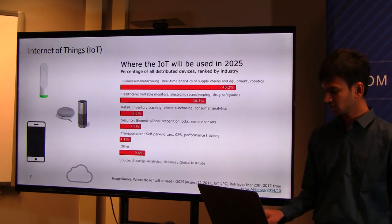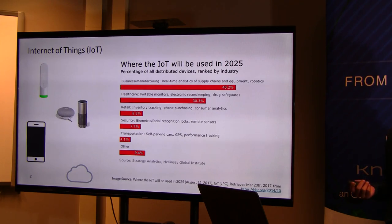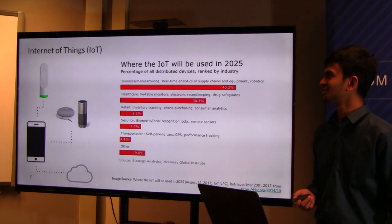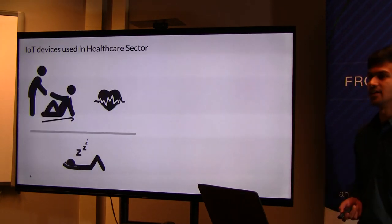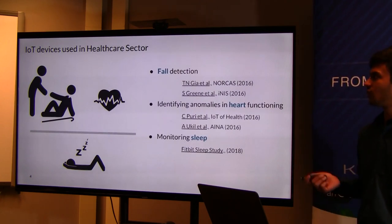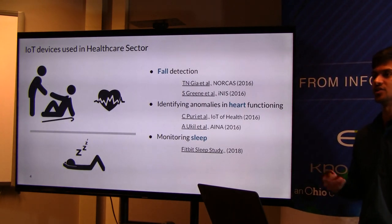Speaking of IoT devices — what are IoT devices? They are basically a network of physical objects which have embedded sensors or software that communicate data over the internet through the smartphone. These have been widely used in many different sectors and industries. One such sector is the healthcare sector, where IoT devices are majorly used. Some applications include fall detection, identifying anomalies in heart rate functioning, and monitoring sleep stages.